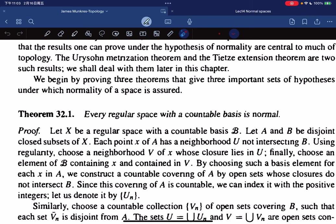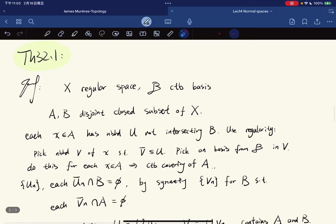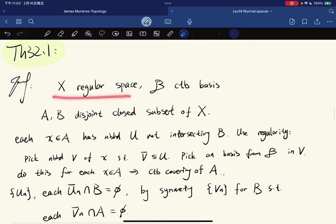Okay, so first the theorem is that every regular space with countable basis is normal. The proof is that given a regular space with countable basis...